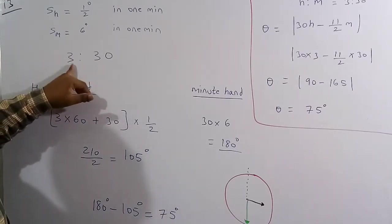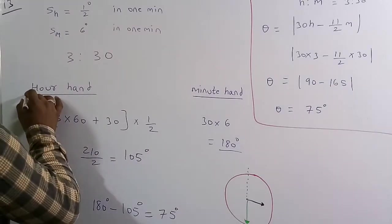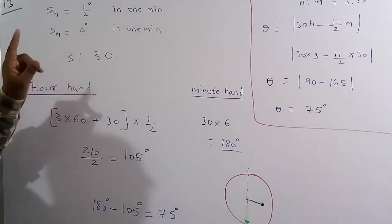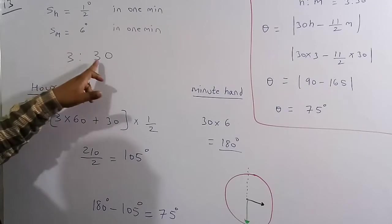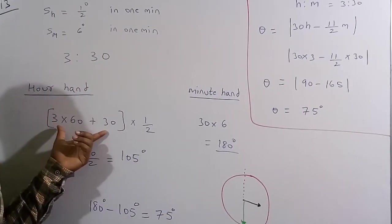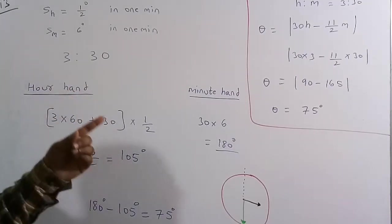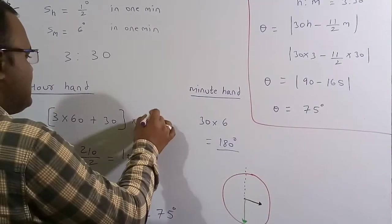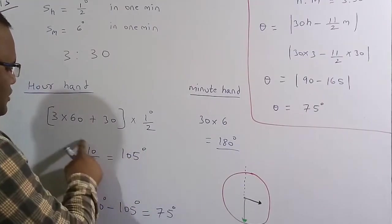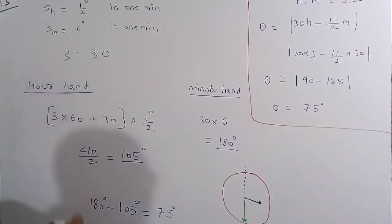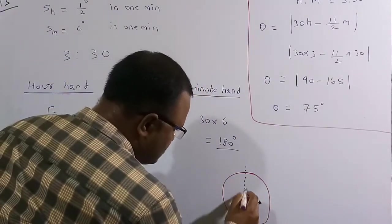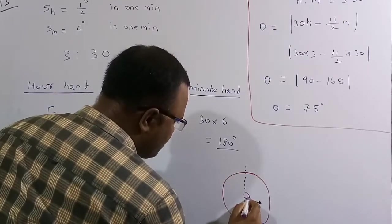To find the angle covered by the hour hand at 3:30: total minutes = 3×60 + 30 = 210 minutes. Multiplying by 0.5 degrees per minute: 210 × 0.5 = 105 degrees. So the hour hand has covered 105 degrees from the 12 o'clock position.